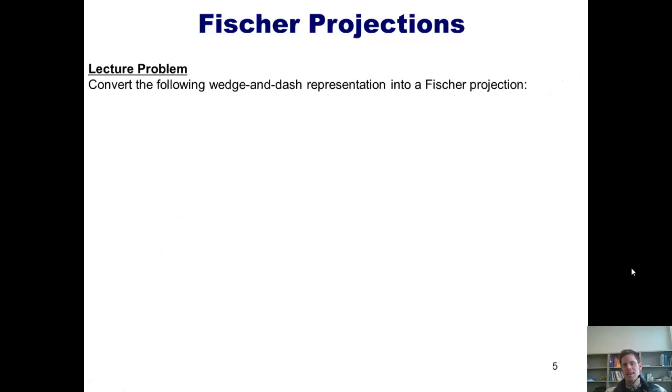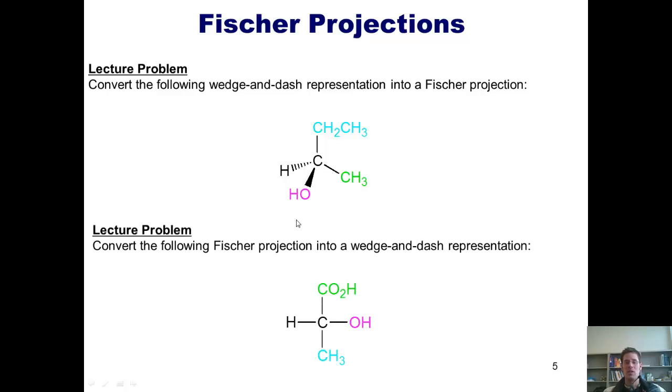So do you think you understand this? Well, let's see by doing an example problem. I want you to convert this wedge and dash representation into a Fischer projection. Once you've done that, I then want you to go the opposite direction and convert this Fischer projection into a traditional wedge and dash representation. You're welcome to pause the video now and try this on your own because I'm going to give you the answers on the next slide.